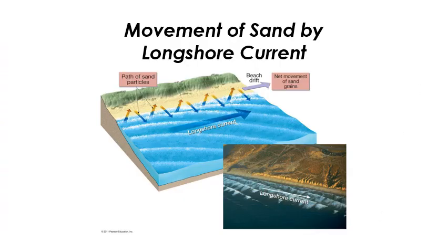Another really interesting dynamic aspect of shorelines is the movement of sand along the shoreline, shown by longshore current or longshore drift. Usually the wind is not going to blow straight into the coast — waves are going to hit at some angle. If you're a particle of sand being pushed up the beach by a wave coming in at some angle, the wave comes back down perpendicular to the shoreline, back down the slope of the beach. So the sand gets pushed up the beach and then back down repeatedly, and the beach drifts in the direction of the prevailing wind.